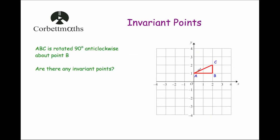Next question: here we've got triangle ABC again and the question says ABC is rotated 90 degrees anti-clockwise about the point B. So B is going to be the centre of rotation, and we're rotating 90 degrees anti-clockwise — that's a quarter turn in that direction. You can use tracing paper for this in an exam. So point A is rotated 90 degrees around to a new position, point B will stay where it is, and point C will be rotated 90 degrees and move to here. The triangle will move to this position after the rotation.